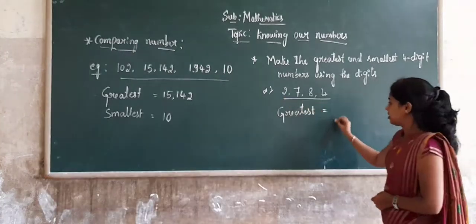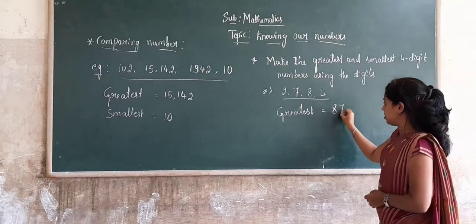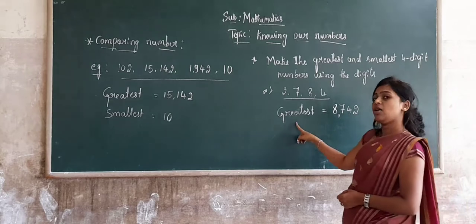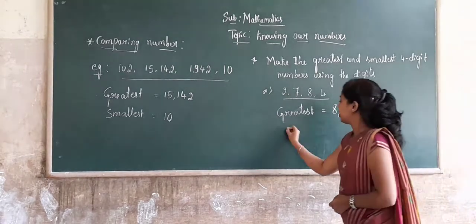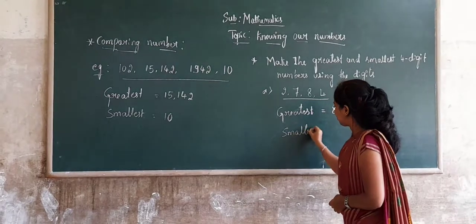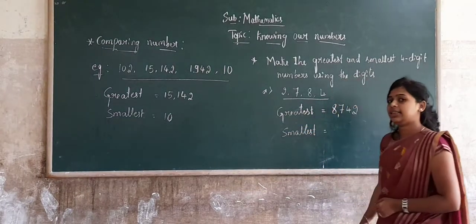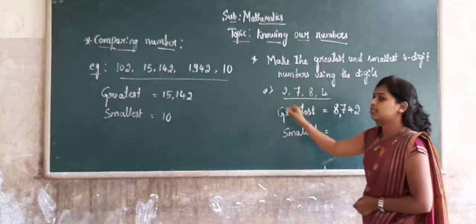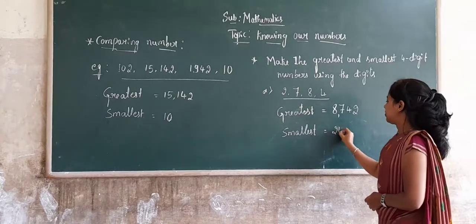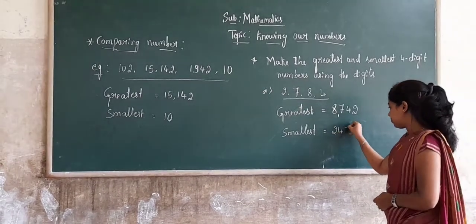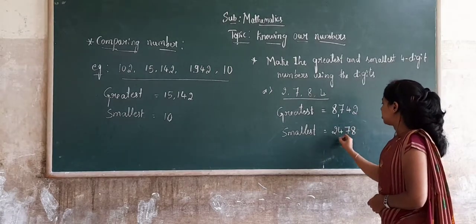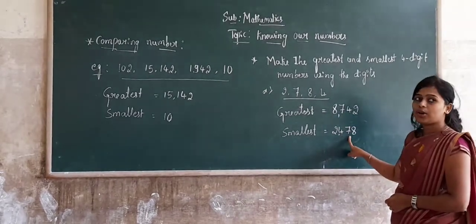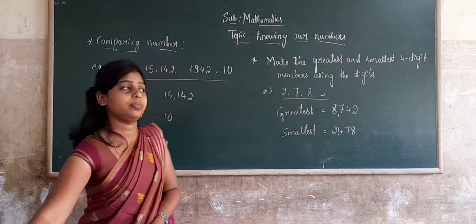For the digits 2, 7, 3, 4: arranging in descending order, 7 is the greatest, next is 4, next is 3, next is 2. This gives the greatest 4-digit number. For the smallest 4-digit number, write the given digits in ascending order. The smallest digit is 2, next is 3, next is 7, next is 4. So the smallest 4-digit number is 2,374.